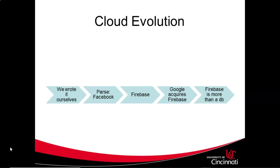First, a few definitions. Firebase Cloud Storage is where we can store binary objects. Firebase Cloud Firestore is a database that can be used to hold JSON data — in other words, it can hold metadata about the photos or files that we've uploaded to Cloud Storage.